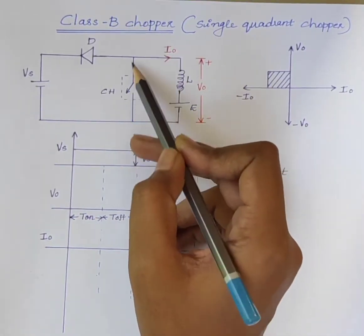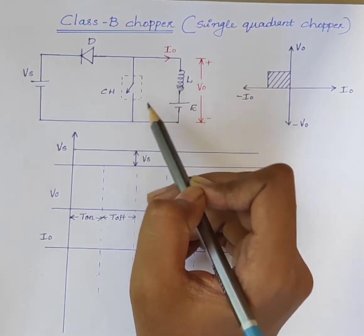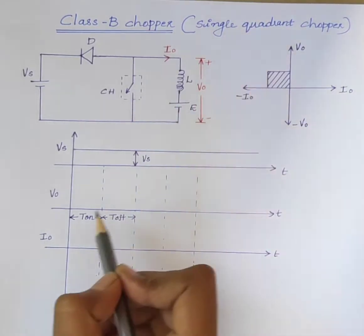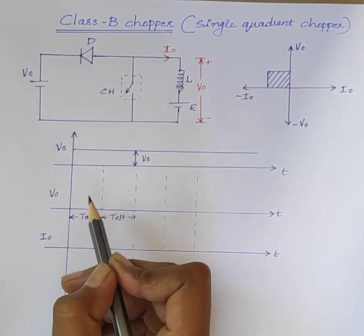When the chopper is on, it acts as short circuit. Therefore, the output voltage V0 is equal to 0.